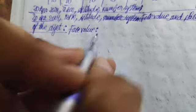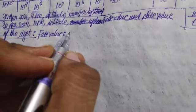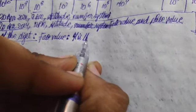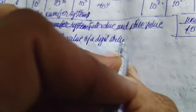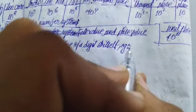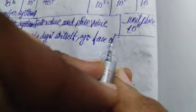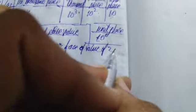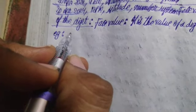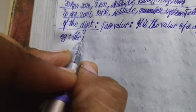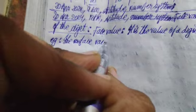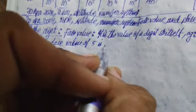When you come across the face value, we are only going to provide the value of the digit itself. It is the value of a digit itself. For example, the face value of 2 is 2, and another example: the face value of 5 is 5.